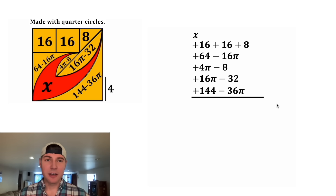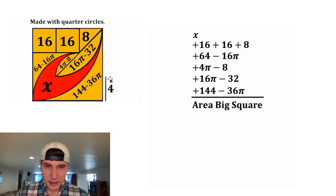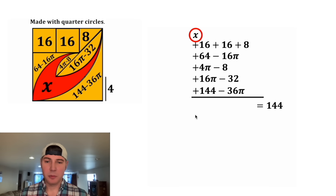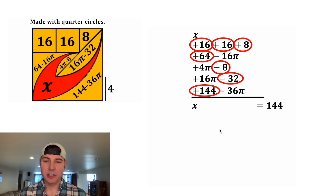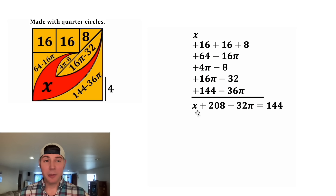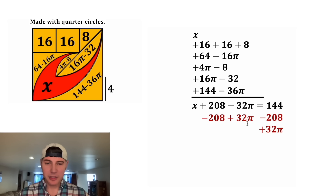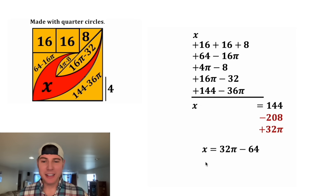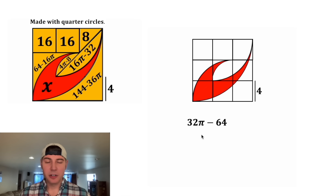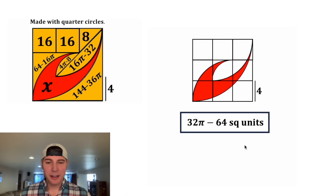After we add all of these together, we'll have the area of the big square. The area of this big square is 12 by 12, which is equal to 144. So we have this single X. We can add up all of these integers, which gives us 208, and then we add up all of the π terms to get negative 32π. Now we want to get X alone on one side. We subtract 208 from both sides and add 32π to both sides. X is going to be equal to 32π minus 64. And the area of this red region is 32π minus 64 square units.